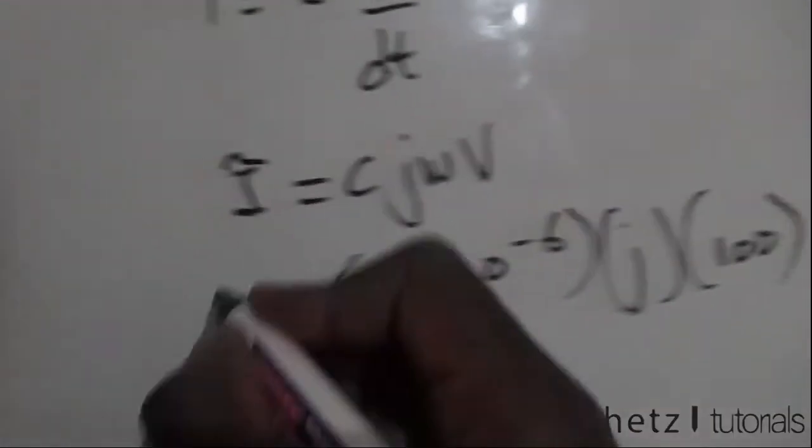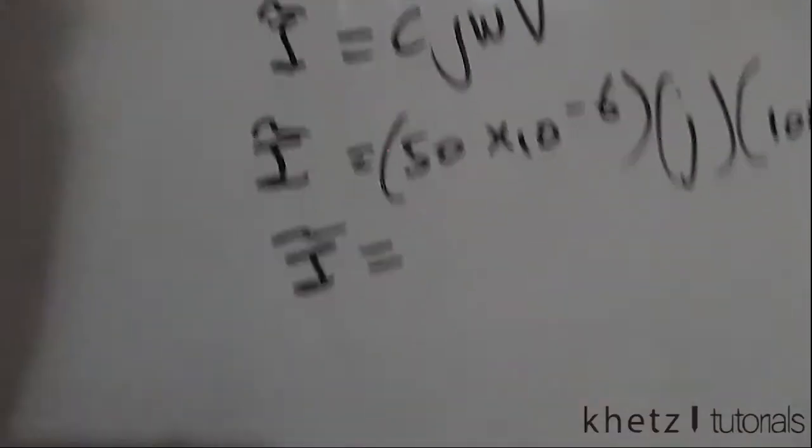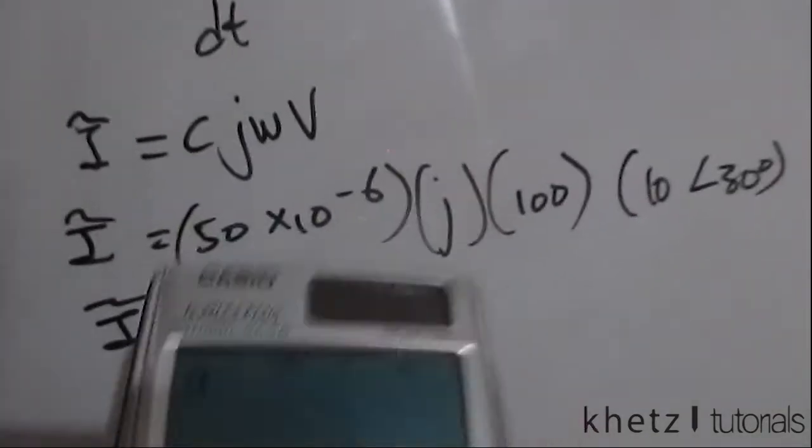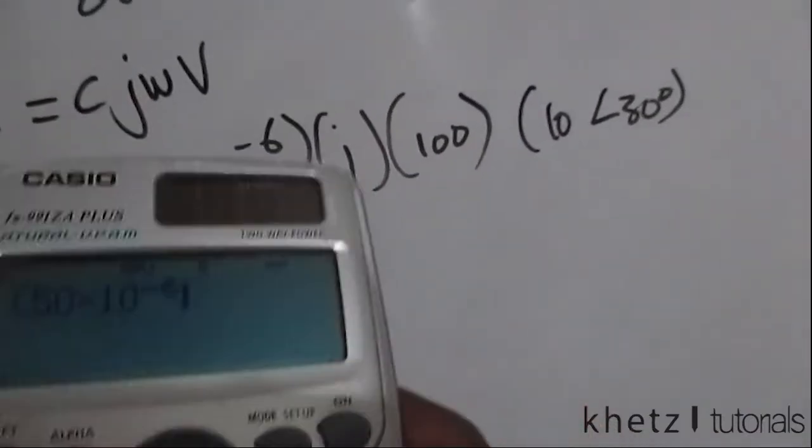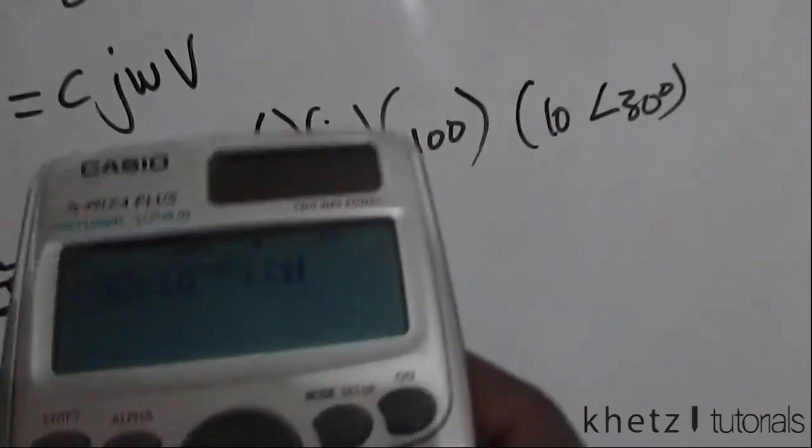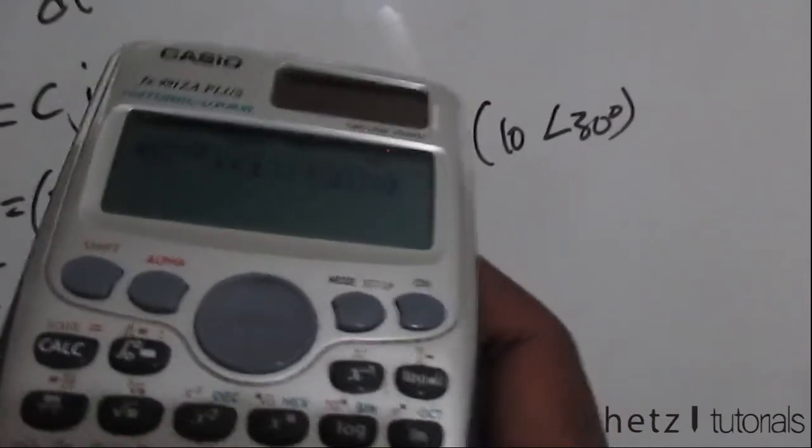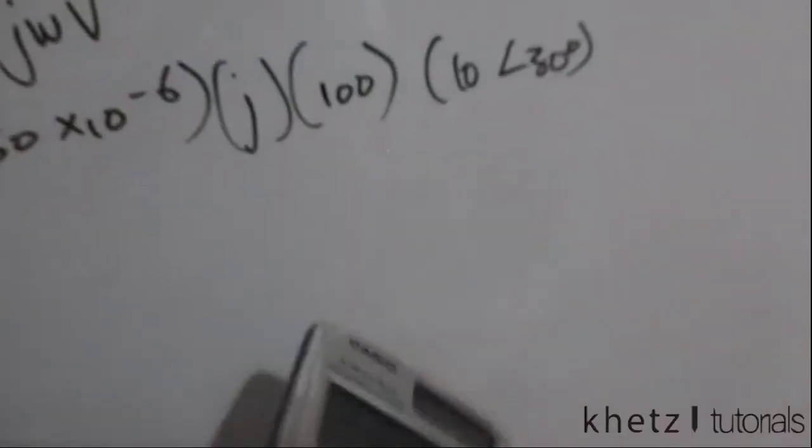I can basically punch all of this into a calculator to find the results. The result would be 50 times 10 to the minus 6 multiplied by j multiplied by 100, then finally multiply by 10 with an angle of 30 degrees. The result of that is this.